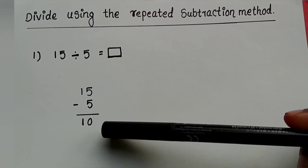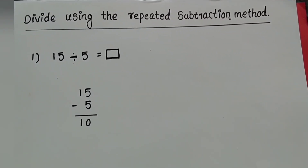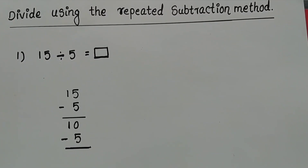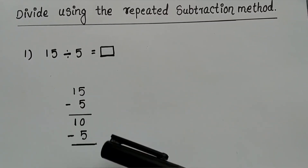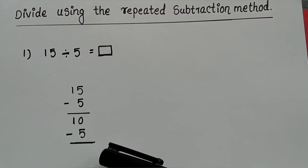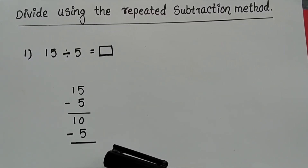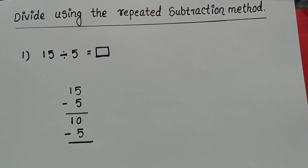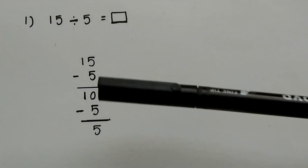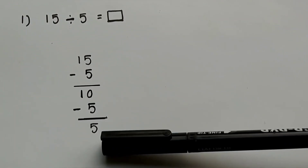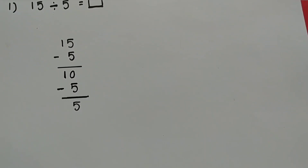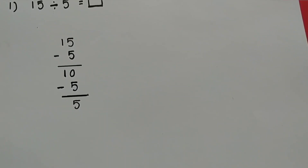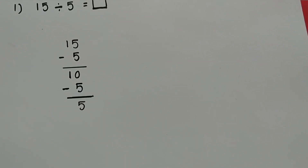Next we are going to subtract 5 from the answer, that means 10 minus 5. Students, tell me what is the answer. 10 minus 5 is equal to 5. Can we stop our subtraction now? No, we have to continue until we get 0. When you get 0 as the answer, you can stop your subtraction.